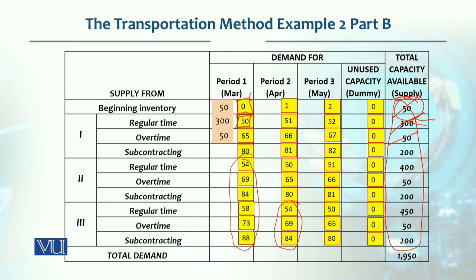We've utilized 350 units so far. Next is overtime: 50 units, which we also completely utilized — bringing us to 400 units of demand met. Now for subcontracting, since the requirement is 450, we need 50 more units from subcontracting, leaving 150 units of subcontracting capacity remaining. Beginning inventory of 50 units is fully consumed — no more units are available there.